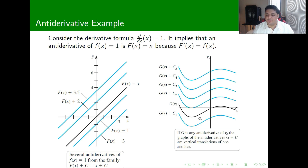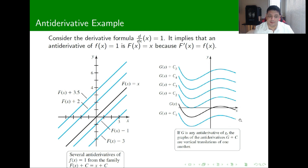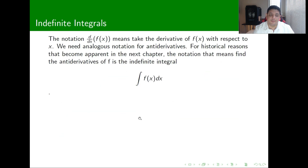In general, if G is an anti-derivative of this function, then the graph of the anti-derivatives — big G plus C — is just a vertical translation of each other. So any other variation is just going to be moving a constant up or down. Because calling big F as small f is such a hassle, we need to look for a different notation for anti-derivatives.